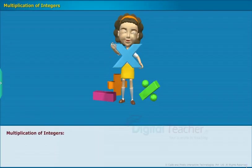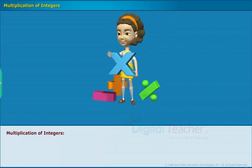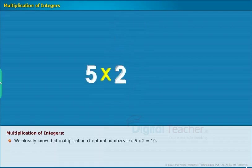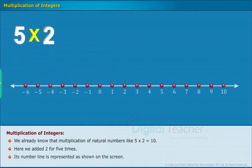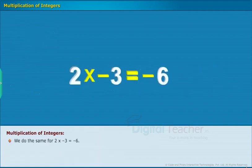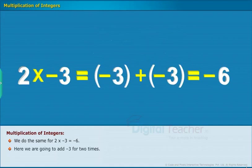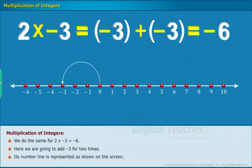Let us now learn about multiplication of integers. We already know that multiplication of natural numbers like 5 into 2 equals 10 — here we added 2 for 5 times, and its number line is represented as shown on screen. We do the same for the product of 2 and minus 3; we obtain its result as minus 6. Here we are going to add minus 3 for 2 times, and its number line is represented as shown on screen.